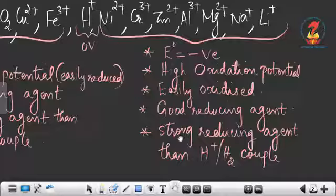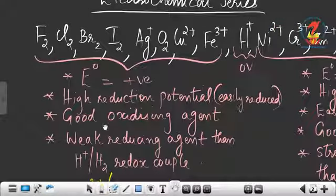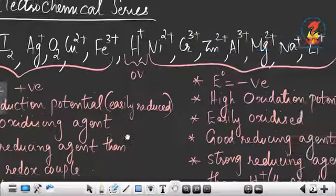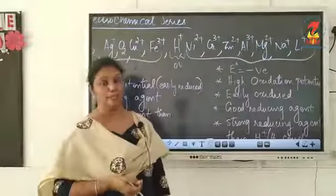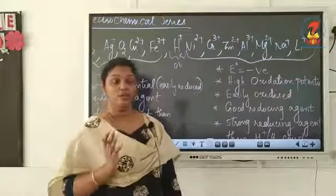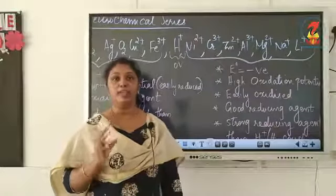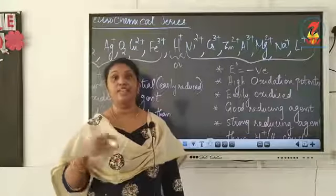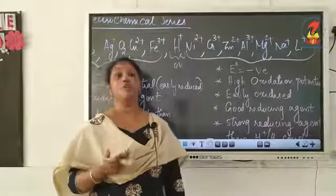Elements with positive E° values in the series are usually halogens — fluorine, chlorine, bromine, iodine — as well as silver ion, copper, and iron. Elements with negative E° values are mainly metals, especially aluminium, magnesium, sodium, and lithium — group 1, 2, and 13 elements. So from the E° value, we can predict: if E° is negative the element is a very good reducing agent; if E° is positive the element is a very good oxidizing agent.